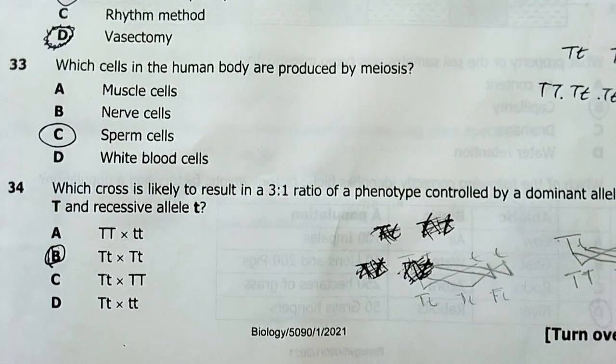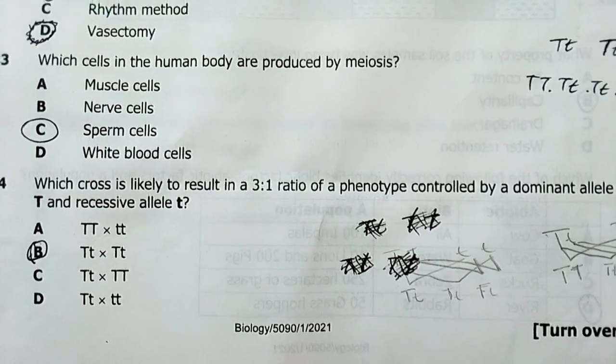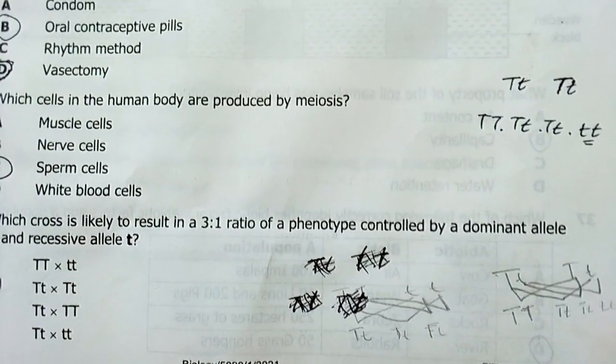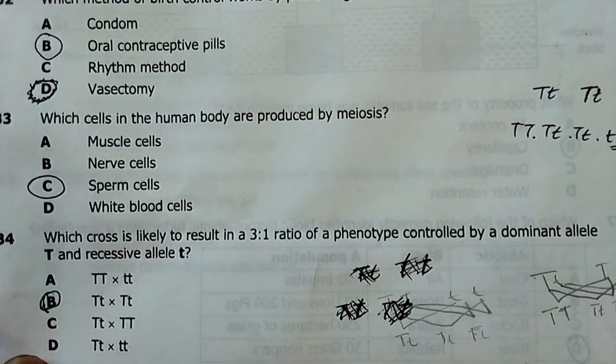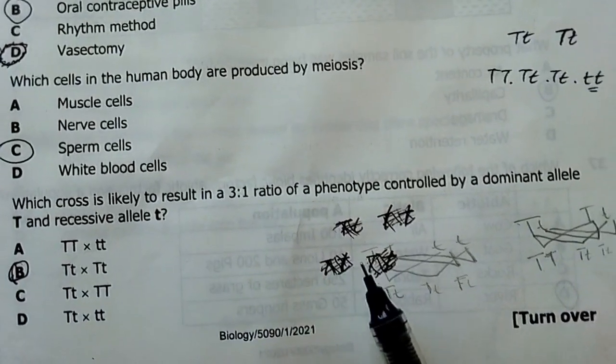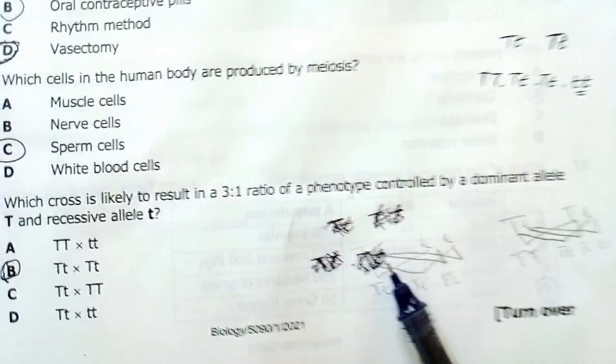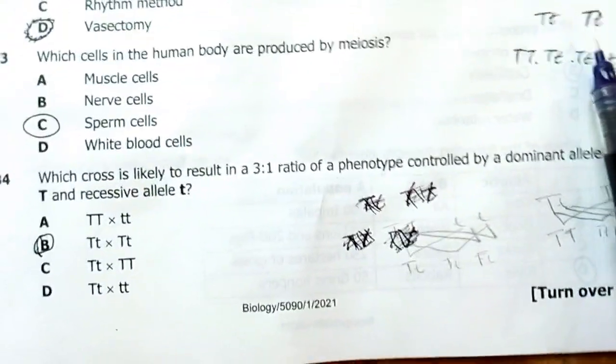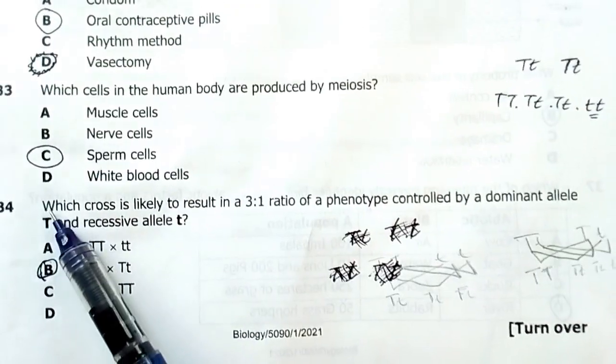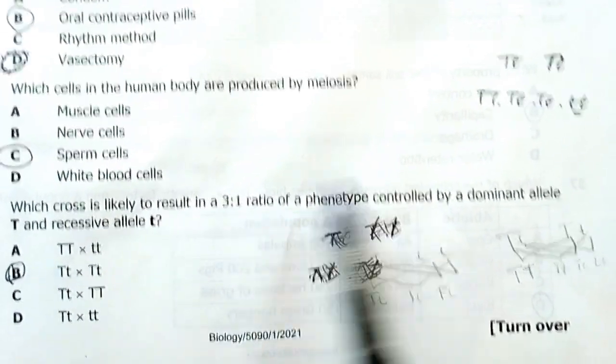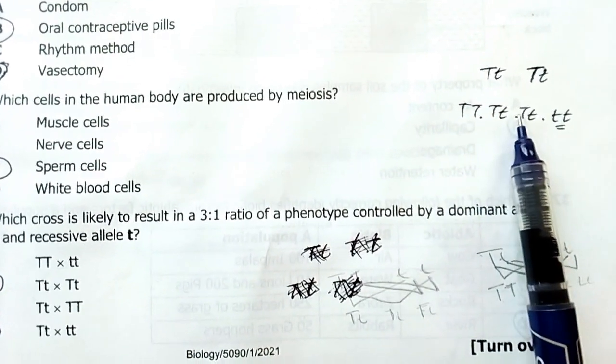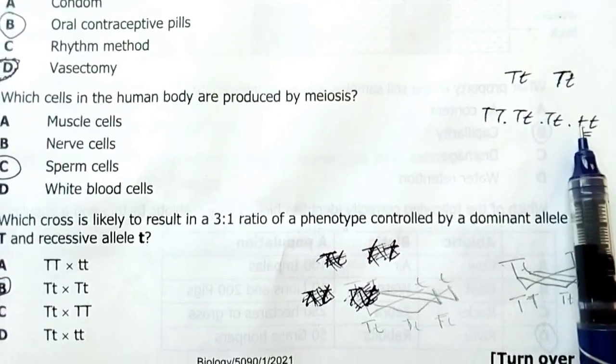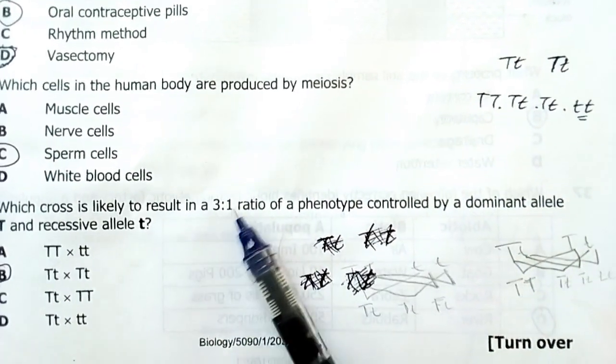Number 34. Which cross is likely to produce a one to three ratio of phenotype controlled by a dominant allele, T, and recessive allele, small letter t? My answer here is B. I had to do a little bit of crossing. Which cross is likely to result into a three to one? This is a three to one in the phenotype. Meaning, this is dominant. Heterozygous dominant. Heterozygous dominant. In other words, the three are dominant. And this one is recessive. Three to one. My answer is B.